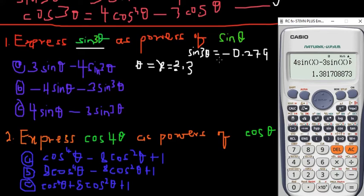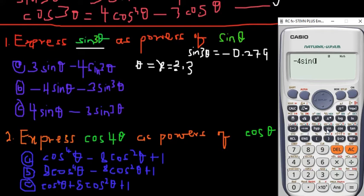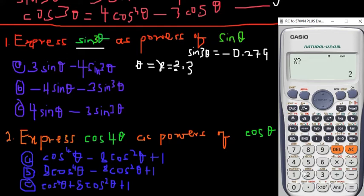Let's move on to option B. We have −4·sin(x) − 3·sin³(x), again substituting x = 2. We get −5.89. That doesn't correspond to −0.279 either, so option B is not the answer.